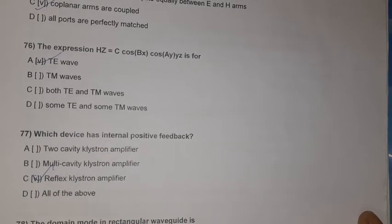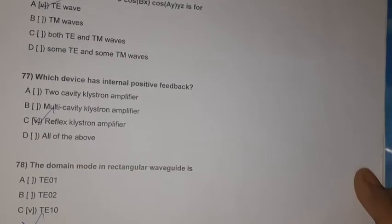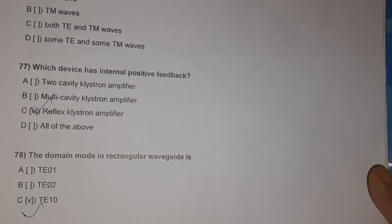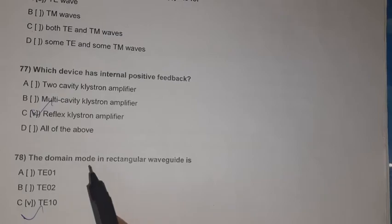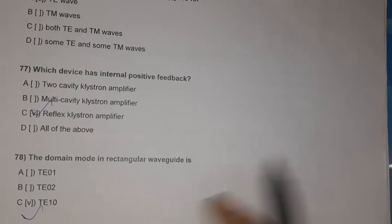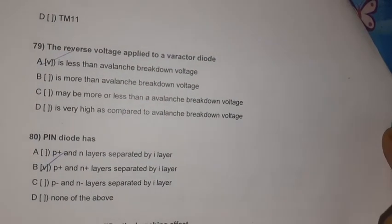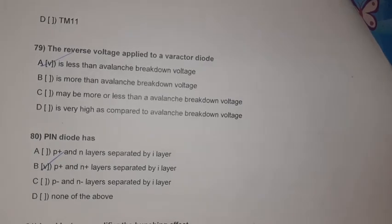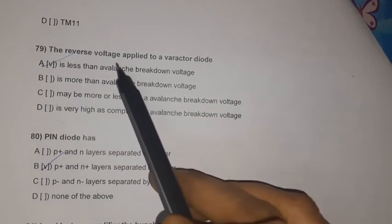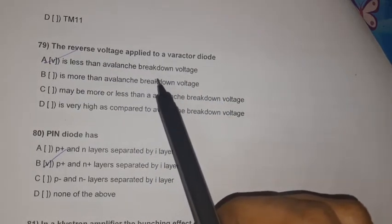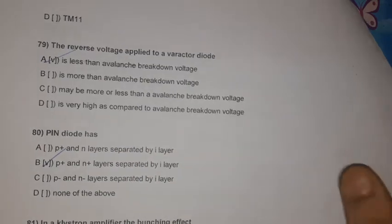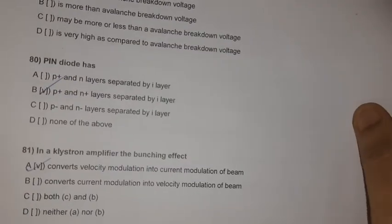Question 76: The dominant mode in a rectangular waveguide is TE10. Question 77: The reverse voltage applied to a varactor diode is less than the avalanche breakdown voltage.